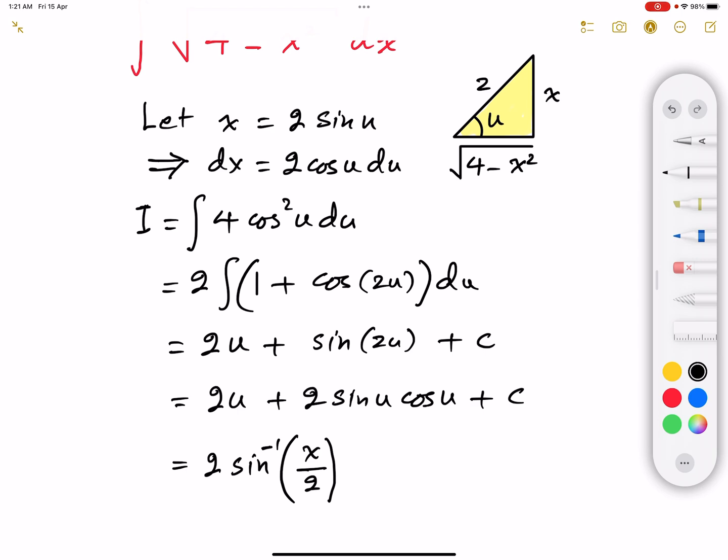The second term is going to give us 2 multiplied by sine u. Sine u is basically x divided by 2. So we have 2 multiplied by x divided by 2. So we have x there. And multiplied by cosine, which is the square root of 4 minus x squared divided by 2. So that's going to give us half multiplied by x multiplied by the square root of 4 minus x squared plus c.